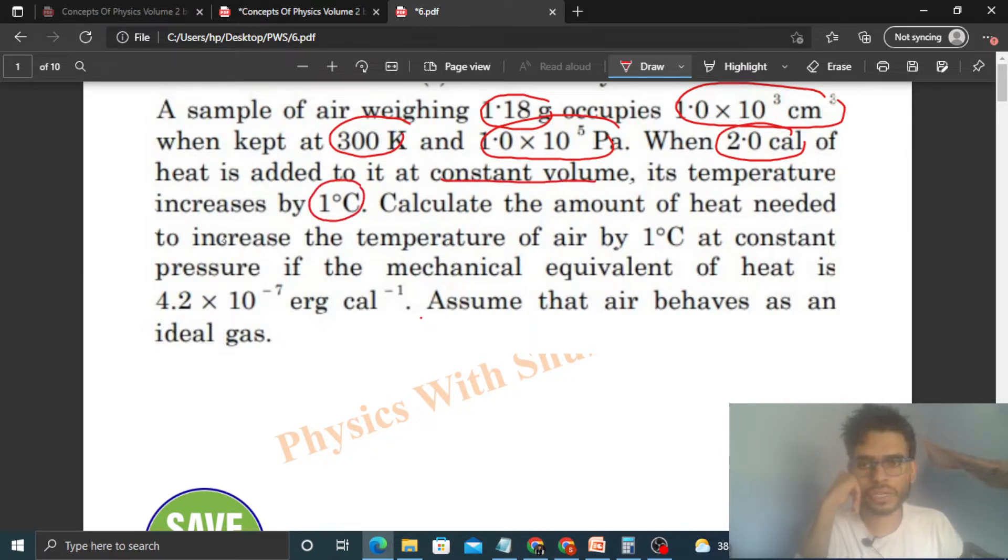Calculate the amount of heat needed to increase the temperature of air by 1 degree Celsius at constant pressure. If the mechanical equivalent of heat is given, assume that air behaves as an ideal gas.